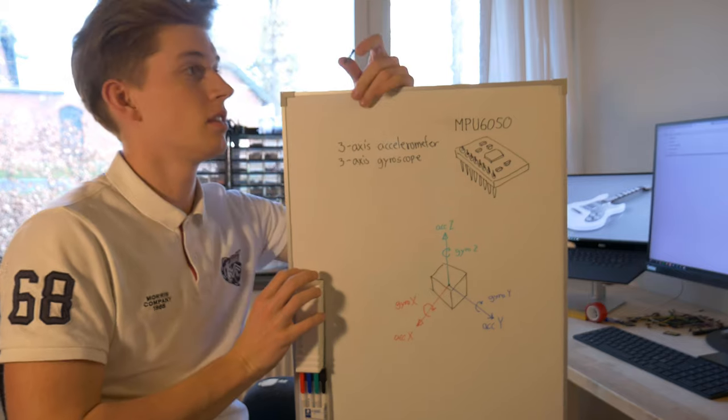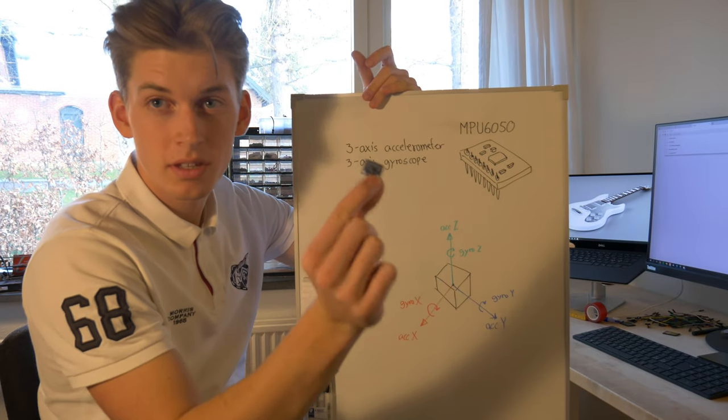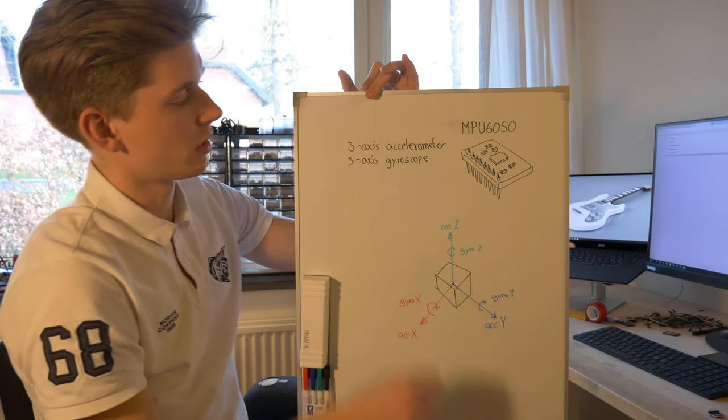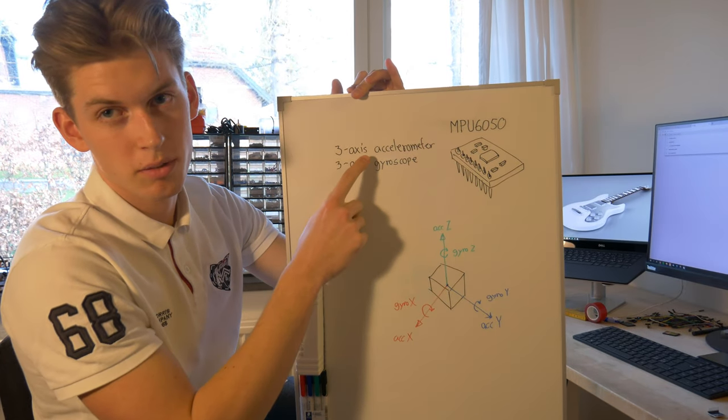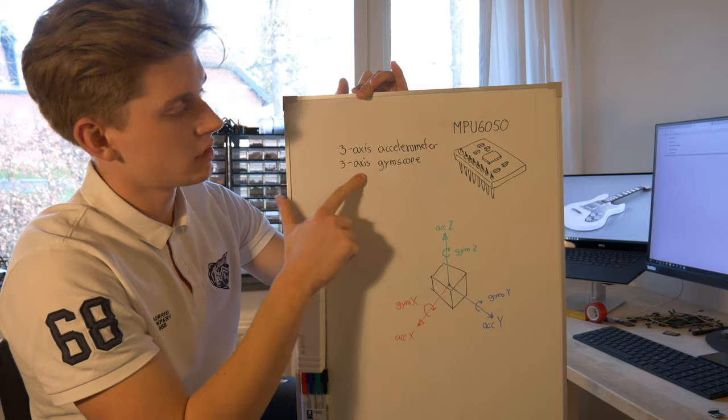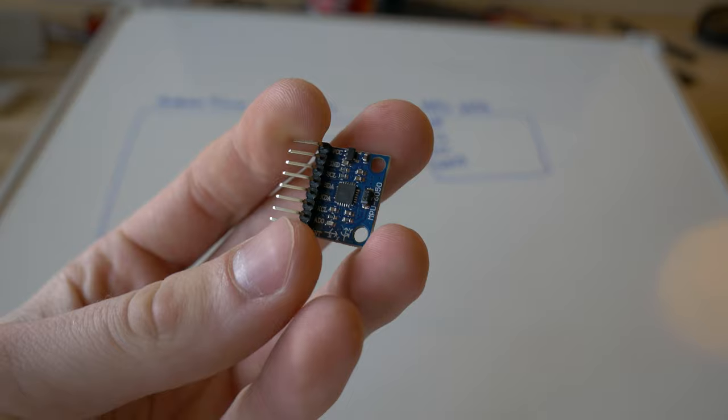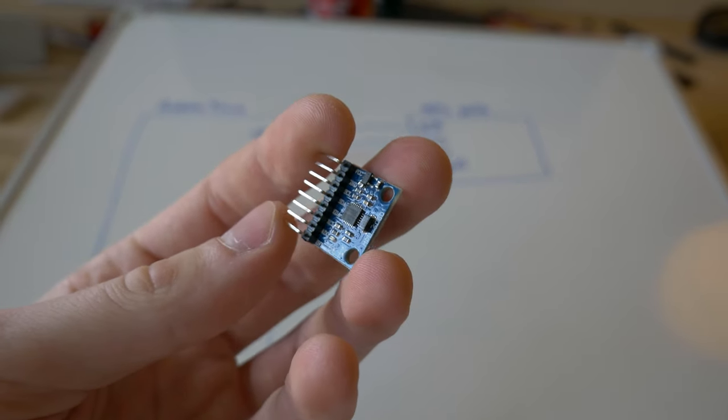This is how big it is, it's very small. It contains a 3-axis accelerometer and a 3-axis gyroscope. The MPU6050 is quite an impressive and complicated chip.